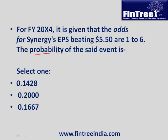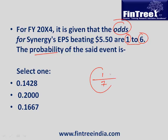You have to calculate probability based on the odds. The odds given in favour are 1 to 6. That means if there are 7 events, once you would be successful and 6 times you would not be successful. Therefore probability is 1 divided by 7, which gives us 14.28%.